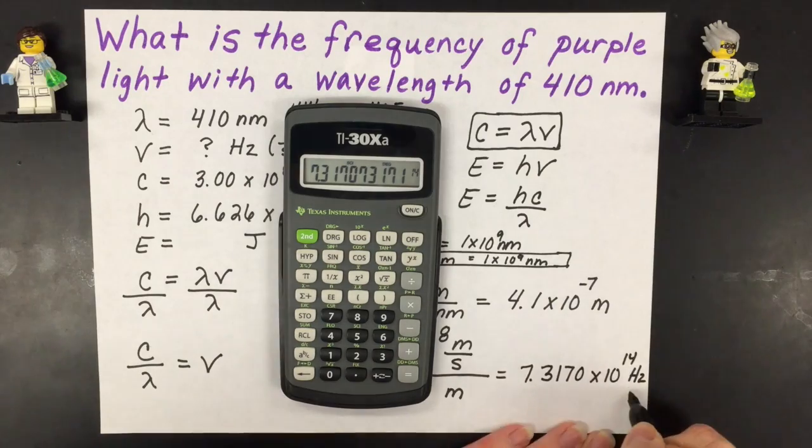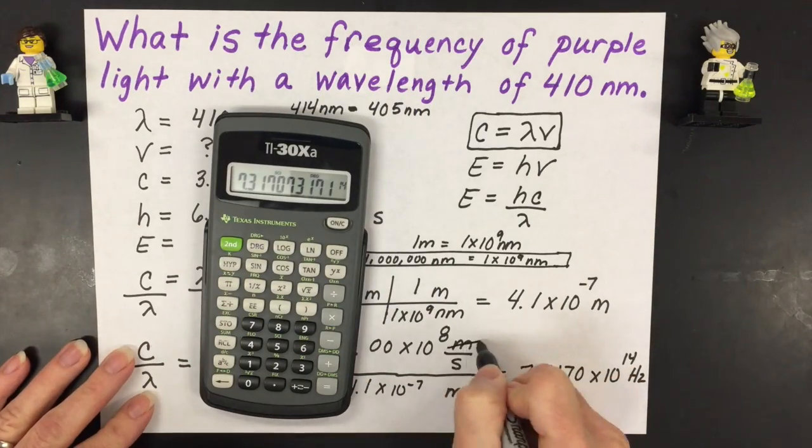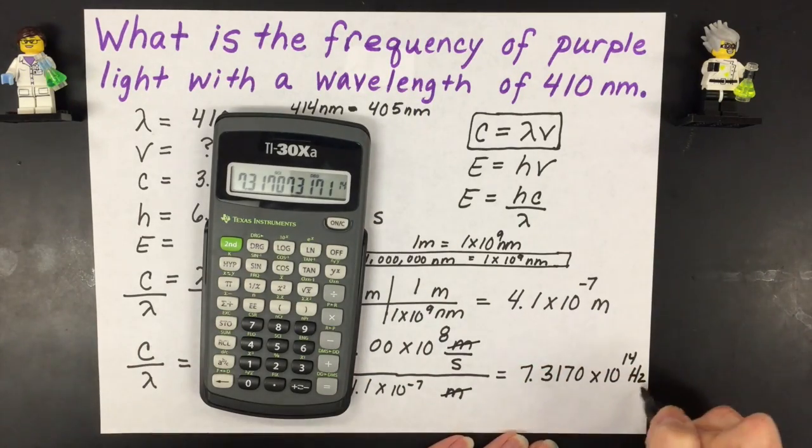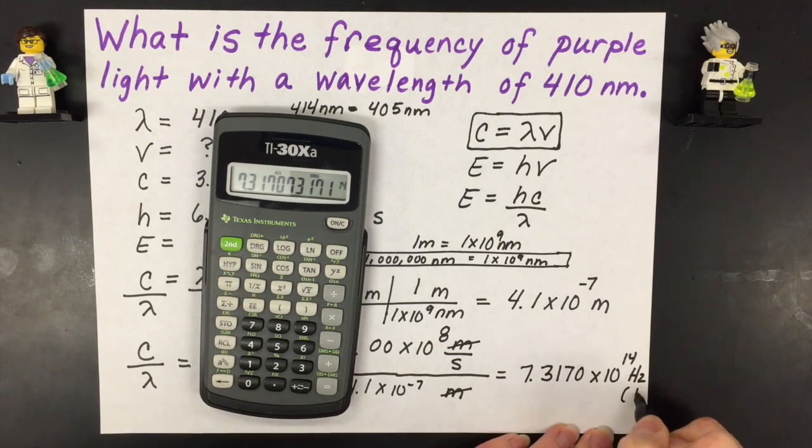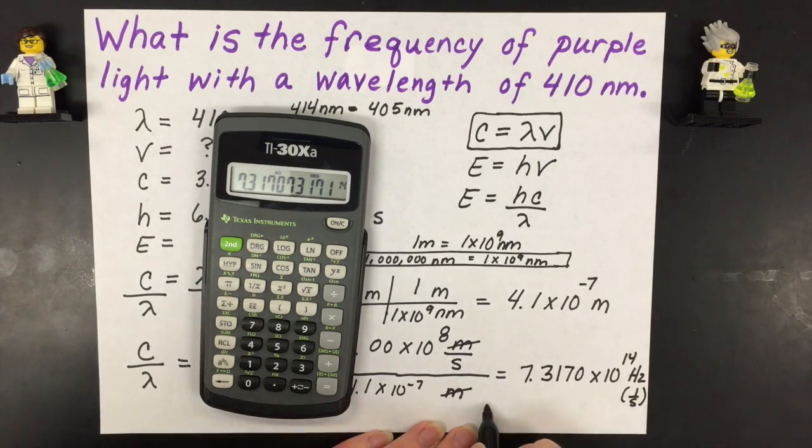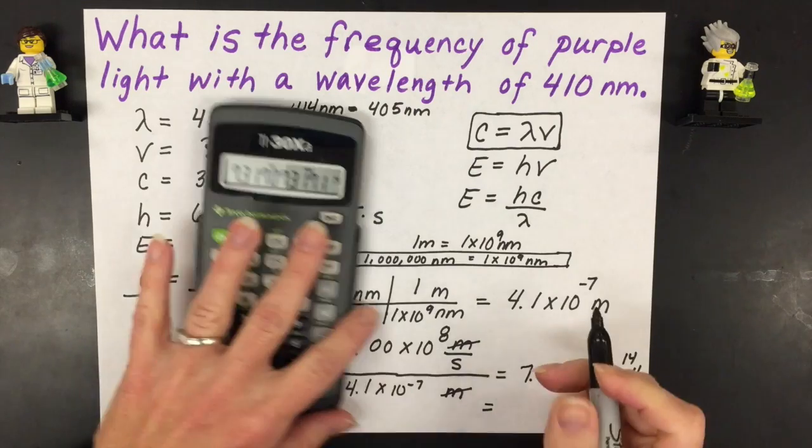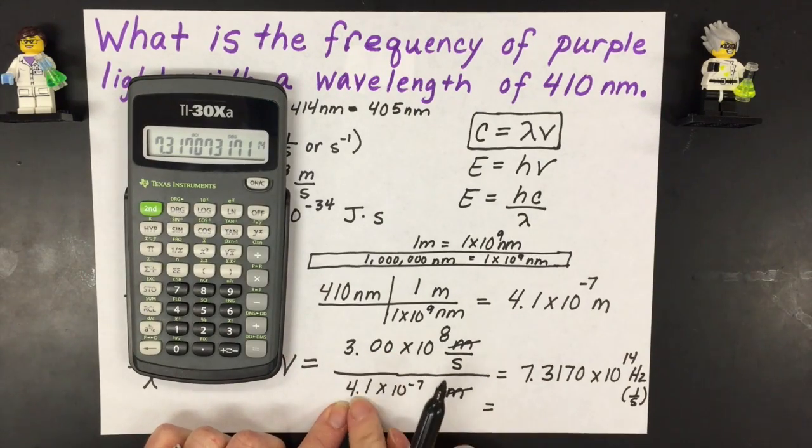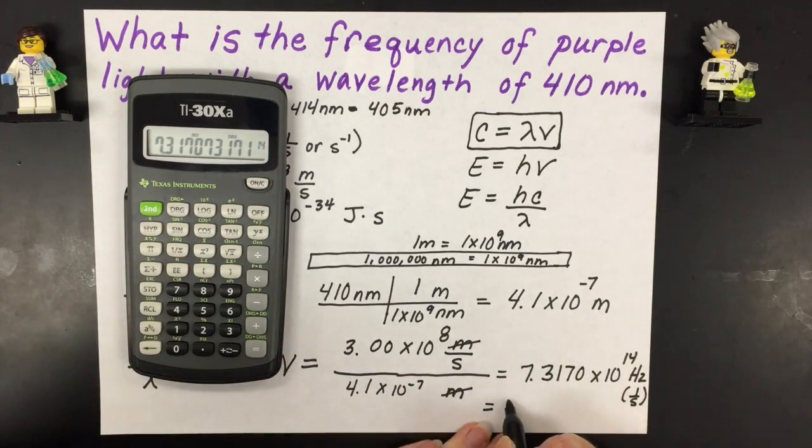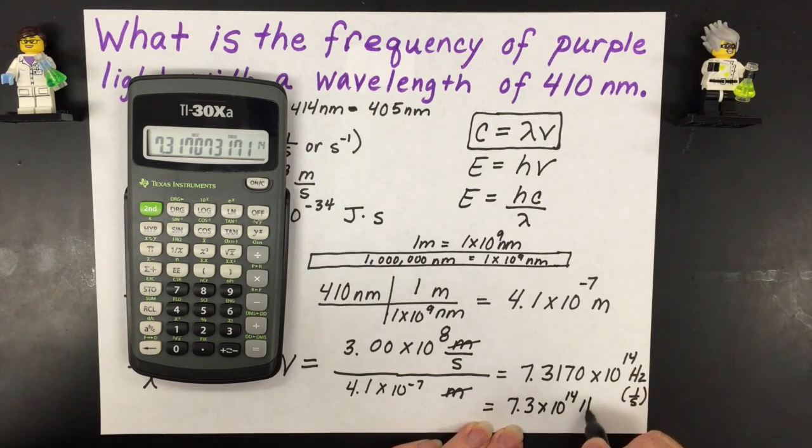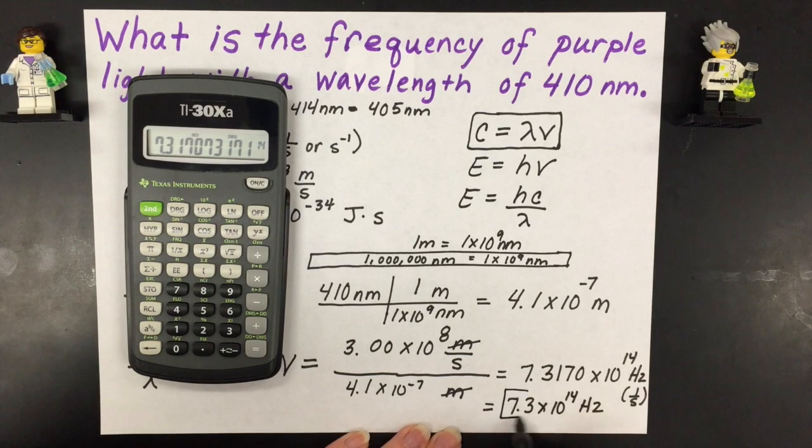And then the answer is hertz or again per second. And the reason why is meters will cancel and we'll have just that hertz or per second left as the unit. But I don't have the proper number of significant figures. I can only keep two. That one has three. This one has two and you can keep the least when you're multiplying and dividing. So this would be then the final answer with significant figures and the appropriate unit.